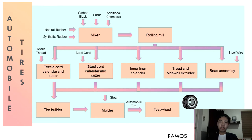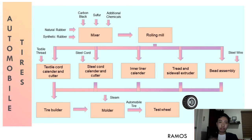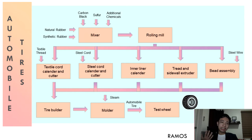After assembly, the tire still needs to undergo curing or vulcanization. It is sent into a molder and filled with hot steam at a temperature of about 280 degrees Celsius. Afterwards, the tire is cooled and sent to a test wheel where it is inflated and spun. The test wheel measures the balance of the tire and whether it runs in a straight line. In modern days, a tire is rarely rejected.